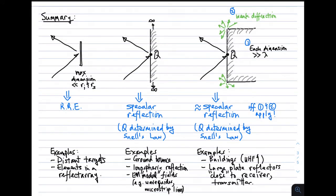To bring order to these different interpretations, consider a summary of three cases. The first case, on the left, is where the scattering object's maximum dimensions are much less than the incident and scattered ranges. This is described by the radar range equation — either bistatic or monostatic. This applies to distant targets as in radar, and also to the individual elements in a reflect array, where the element dimensions are small compared to the ranges.